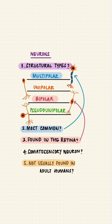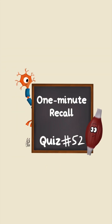We usually don't find unipolar neurons in adult humans, but a slightly modified version, which has two processes but a single pole, is the pseudo-unipolar neuron. These are our sensory neurons. Like and subscribe for more.